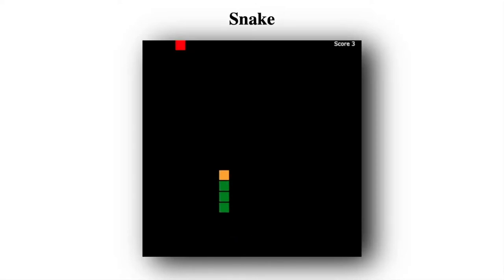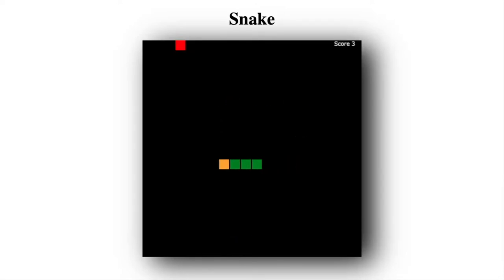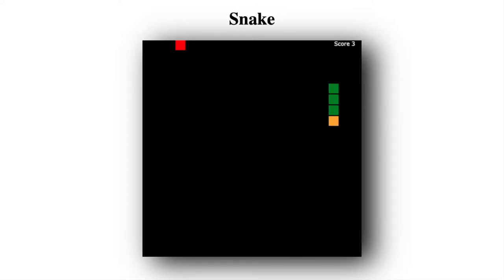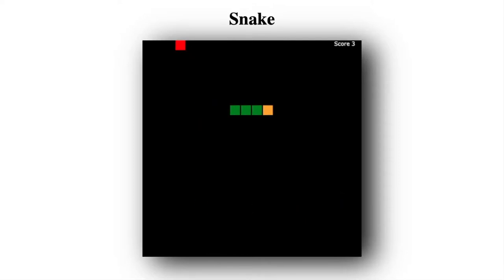You, the player, move around a line — a.k.a. the snake. As you eat various items, your snake body gets longer. The objective is to keep eating the red dot and avoid hitting your own body or the edges of the screen. Otherwise, it's game over. It's your basic last-as-long-as-you-can game — get the highest score using your quick reflexes.